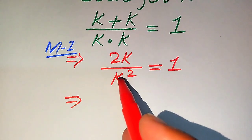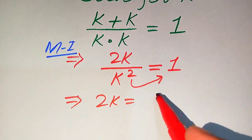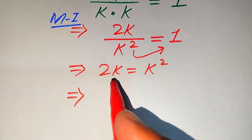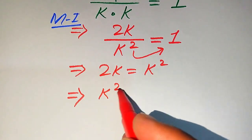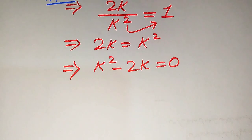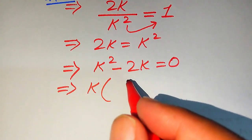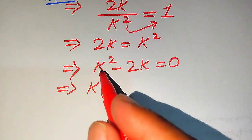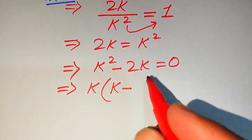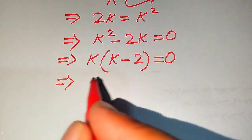In the first method, we find the roots of this equation. We have k squared on the left-hand side; moving it to the right-hand side gives us 2k equals k squared. Moving 2k to the right-hand side, it becomes k squared minus 2k. Both terms involve k, so we factor out k as the common term.